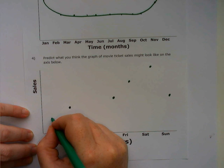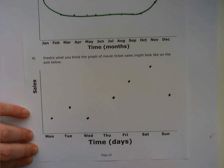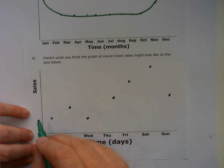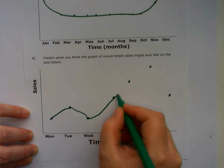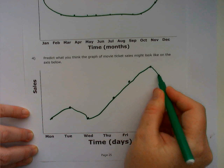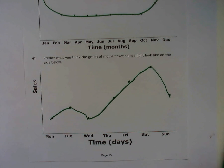But Monday and Wednesday, people are at work and don't tend to go to the movies quite so much. So that's going to be my prediction of what I think the model might look like for sales of movie tickets.